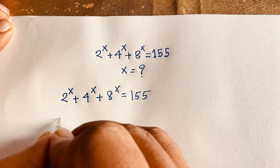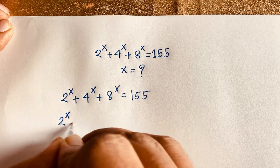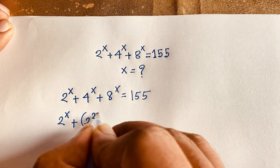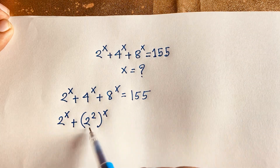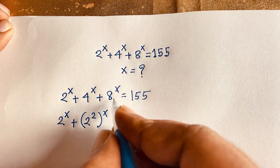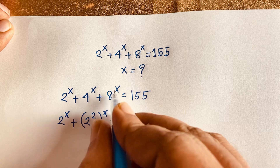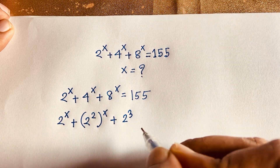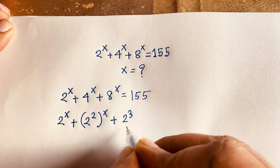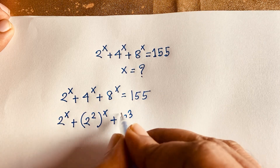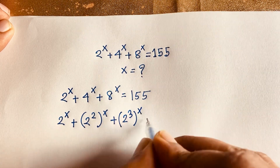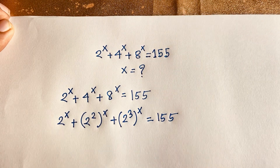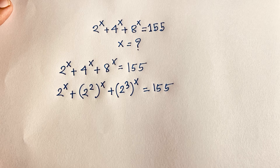Here we have 2 to the power x, plus 4 — which I can write as 2 to the power 2 — whole to the power x. Then 8 to the power x: since 2 times 2 times 2 equals 8, I can write 8 as 2 to the power 3, whole to the power x. So the equation becomes terms with base 2 to the power x, all equal to 155.